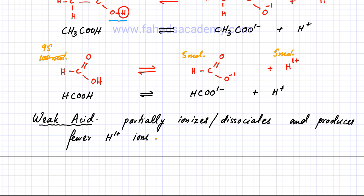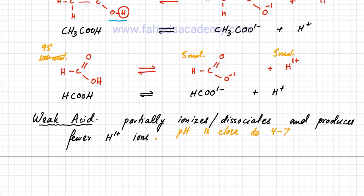Since a weak acid produces fewer H⁺ ions, its pH is always close to 7, typically between 4 and 7 for carboxylic acids. 7 is the neutral point — the pH of water. Acids have a pH of less than 7. If it's a strong acid, the pH is close to 0; if it's a weak acid, the pH is close to 7, so probably between 4 and 7 for carboxylic acids.